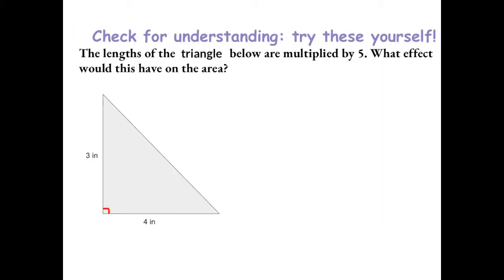Try this one yourself to check for understanding: the lengths of the triangle below are multiplied by 5. What effect would this have on the area?